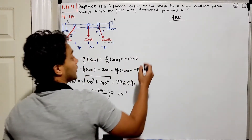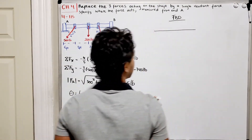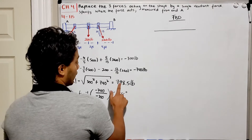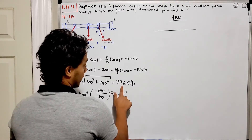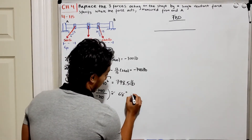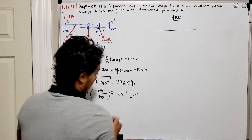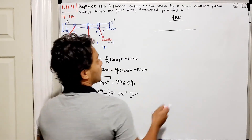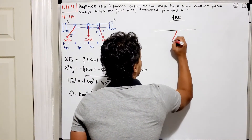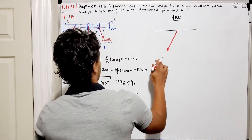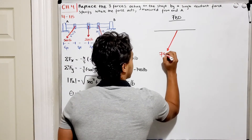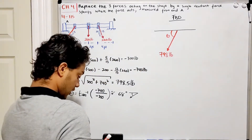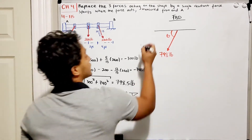Back to the free body diagram — the shaft is this line. I have a force acting on the shaft with a magnitude of 798.5 pounds at an angle of 68 degrees from the negative x-axis. This is my angle theta, and my force will look something like this, with magnitude 798 pounds.